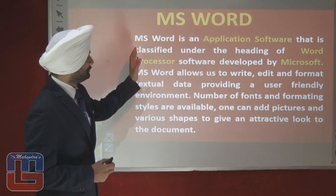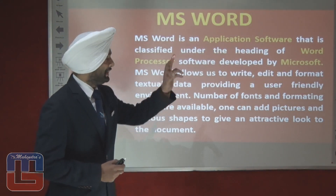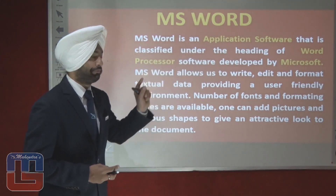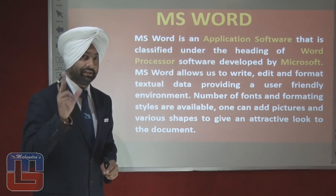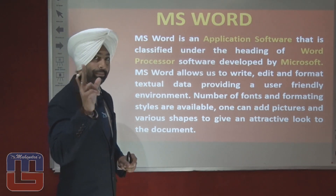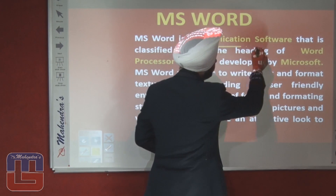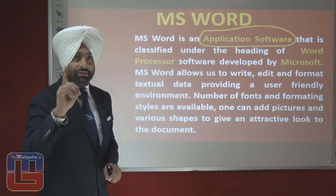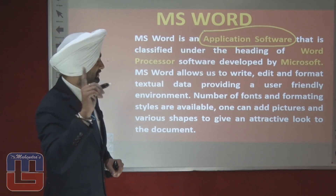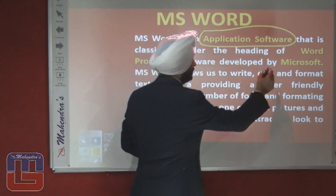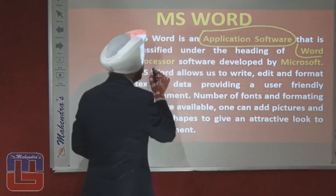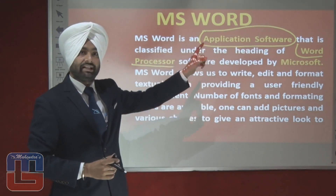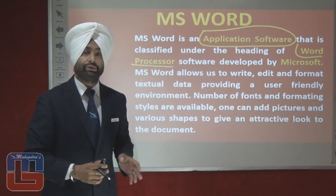MS Word is an application software that is classified under the heading of Word Processor Software. Two important points here: first, MS Word is an application software — a question worth one mark. Second, MS Word is a Word Processor Software — an application software classified under the heading of Word Processor Software.